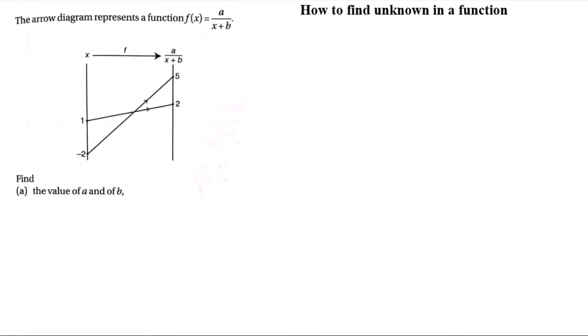Next, you need to find an unknown just now, but now 2 unknowns which are a and b. So to find 2 unknowns, same method. Analyze the diagram where we know that f(1) will be equal to 2 and f(negative 2) will be equal to 5. So from the question, we know that f(x) is equal to a divided by x plus b.